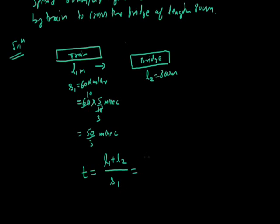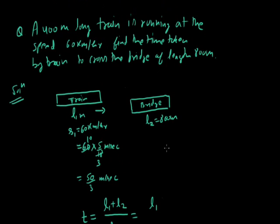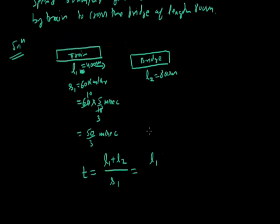Put the values. The length of the train is given in the question, that is 400 meter. In place of L1 we write 400, in place of L2, the bridge, that is 800 meter, divided by the speed of train, that is 50 by 3 meter per second. The answer should come in seconds because meter and meter get cancelled. So 400 plus 800 give you 1200.